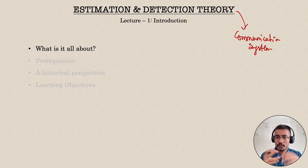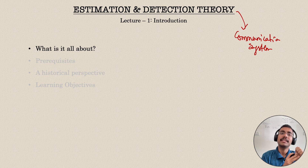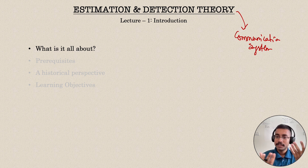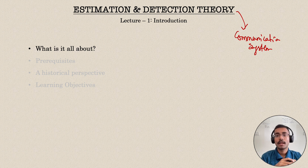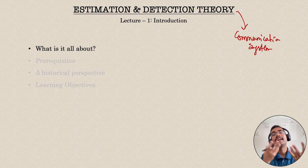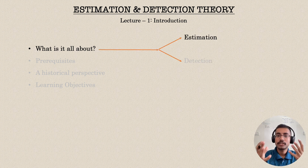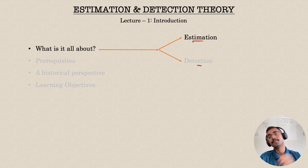Coming to what it is all about — since it was developed in relevance to communication systems, there are signals we need to detect in some scenarios, and we need to find out the values in some scenarios. So there are two classes of problems here: one is the estimation problem and the other is the detection problem.